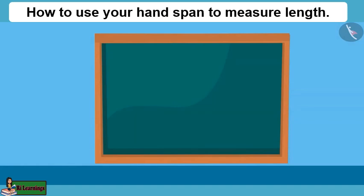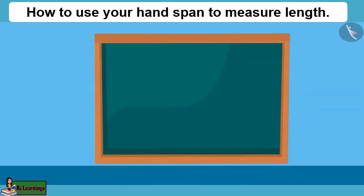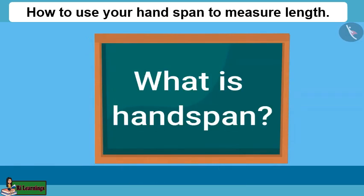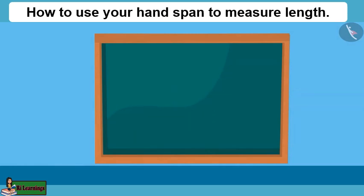How to use your hand span to measure length: Today we will decorate the board with ribbon, but I have to measure the length of this board to know how much ribbon is required. We can measure its length with our hands — 1, 2, 3, 4, and 5. The length of the board is 5 hand spans. The measurement taken by hand is called hand span.